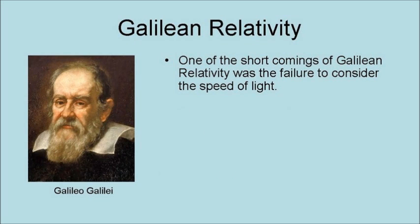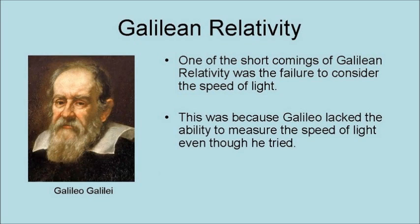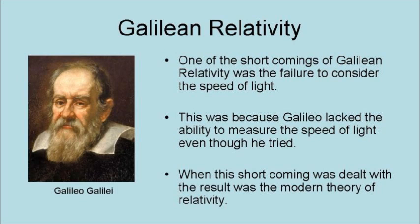One of the shortcomings of Galilean relativity was the failure to consider the speed of light. This was because Galileo lacked the ability to measure the speed of light, even though he tried. When this shortcoming was dealt with, the result was the modern theory of relativity.